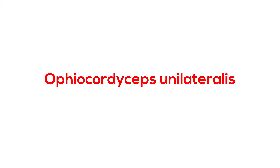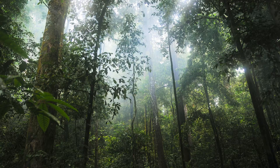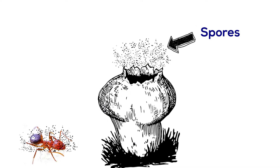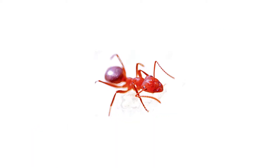The Ophiocordyceps unilateralis, the zombie ant fungus, has only one goal: to propagate and spread. Found in tropical forests, the fungus completes its life cycle by zombifying a carpenter ant. It infects ants through spores that attach to and penetrate the exoskeleton, slowly taking over the ant's behavior and body.